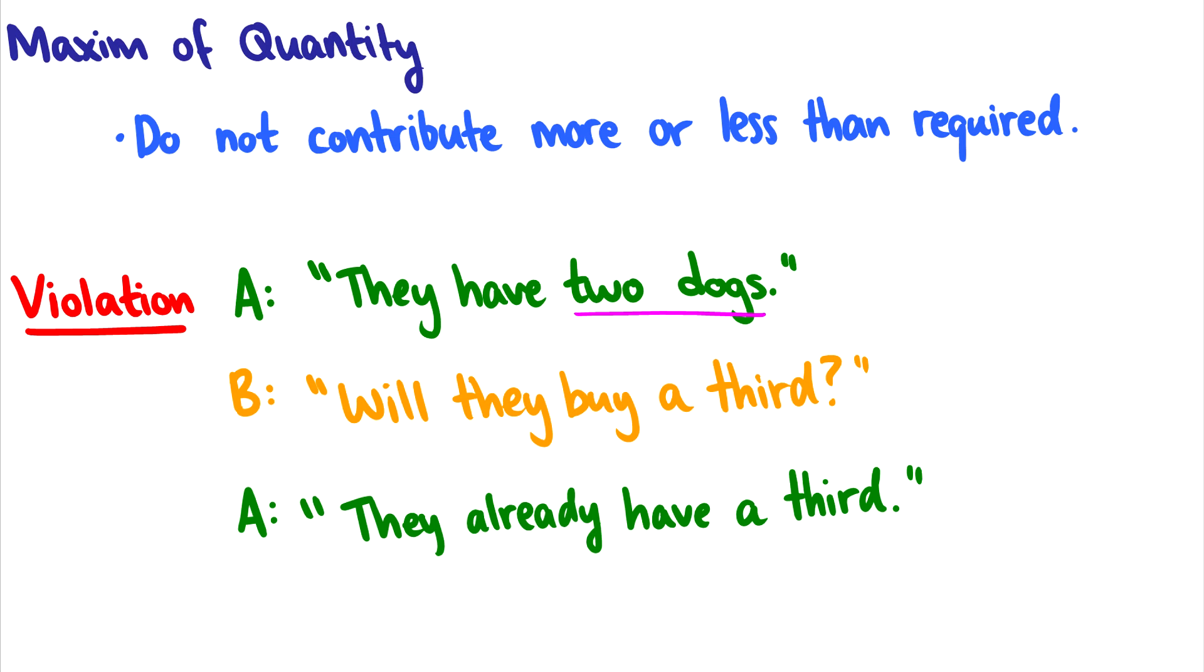So we expect people to contribute the necessary information. So if B is starting this conversation by saying, oh yeah, how are these people? Do they have any pets? And you say they have two dogs. Well, you're not providing enough information. So when you ask this question, will they buy a third? And A says they already have a third. I mean, B is thinking like, excuse me, why didn't you tell me this information? Because A has violated the maxim quantity by saying they have two dogs in the first place when actually they have more.